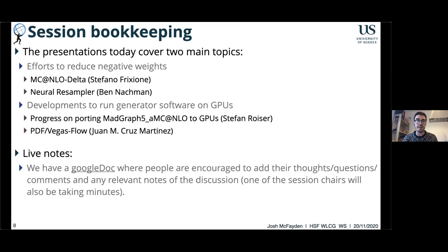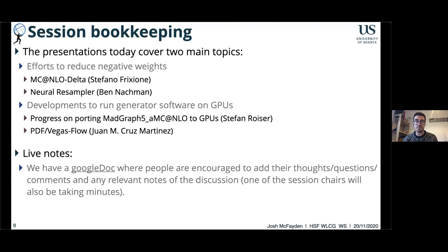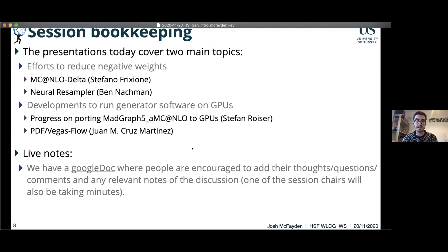For today's bookkeeping: we have presentations grouped into two main topics. First, efforts to reduce the effect of negative weights — a talk on MCA@NLO delta and neural positive resampling methods. Second, developments to run software on GPU — progress towards porting MadGraph5 AMC@NLO, and the PDF and Vegas-flow tools released recently. The link to the Google Doc for live notes is available, and you're strongly encouraged to add thoughts, questions, and comments as we go through.